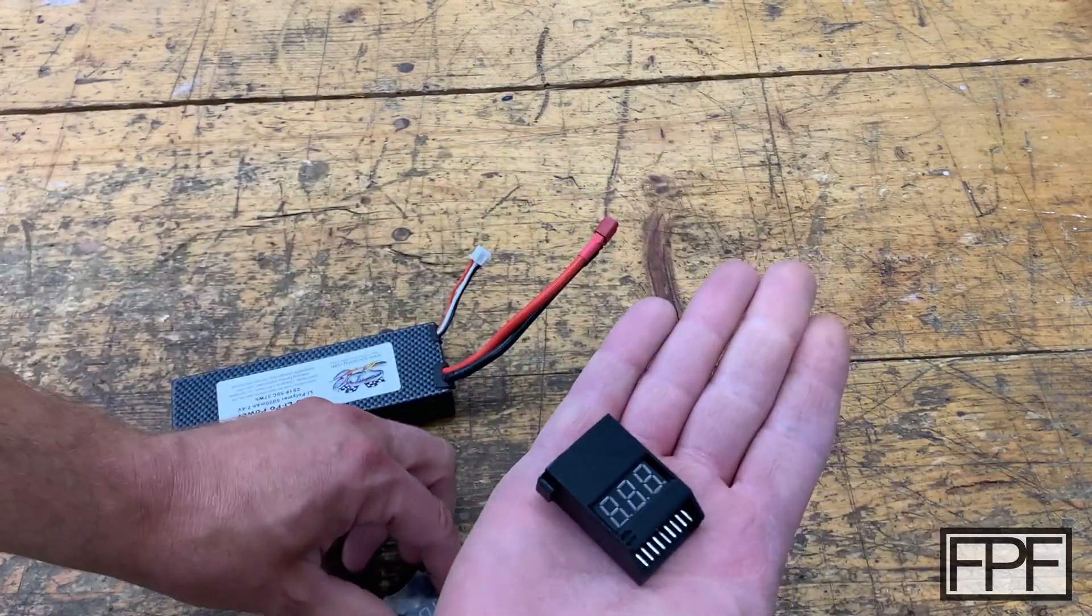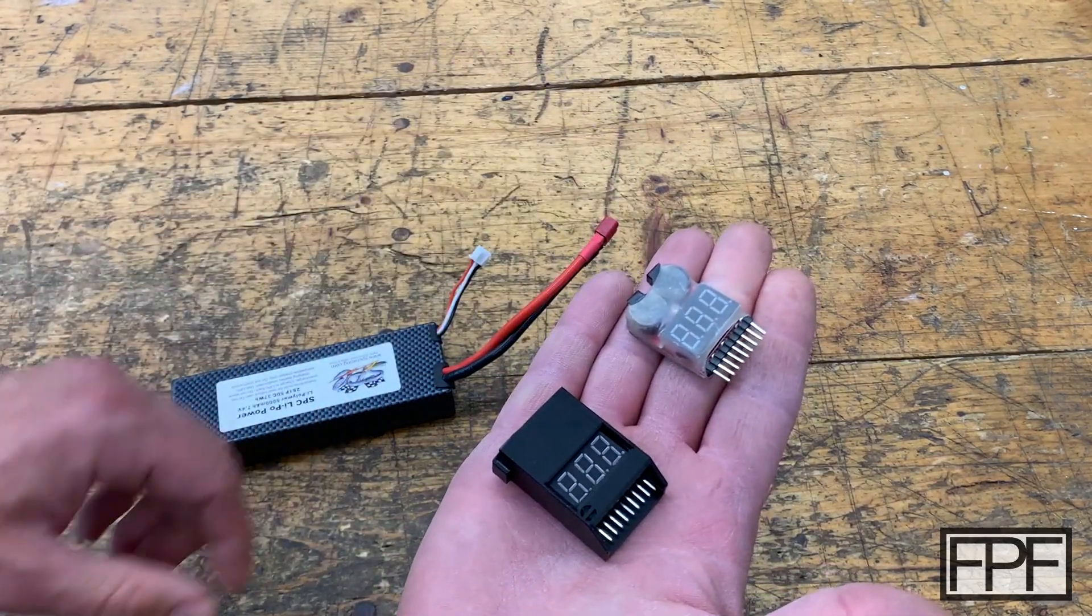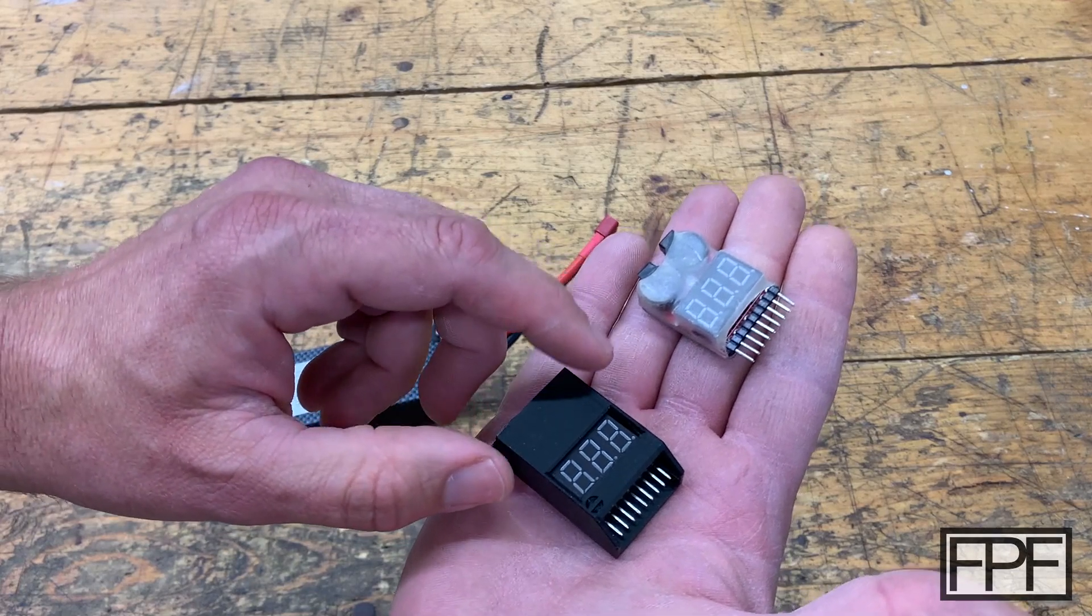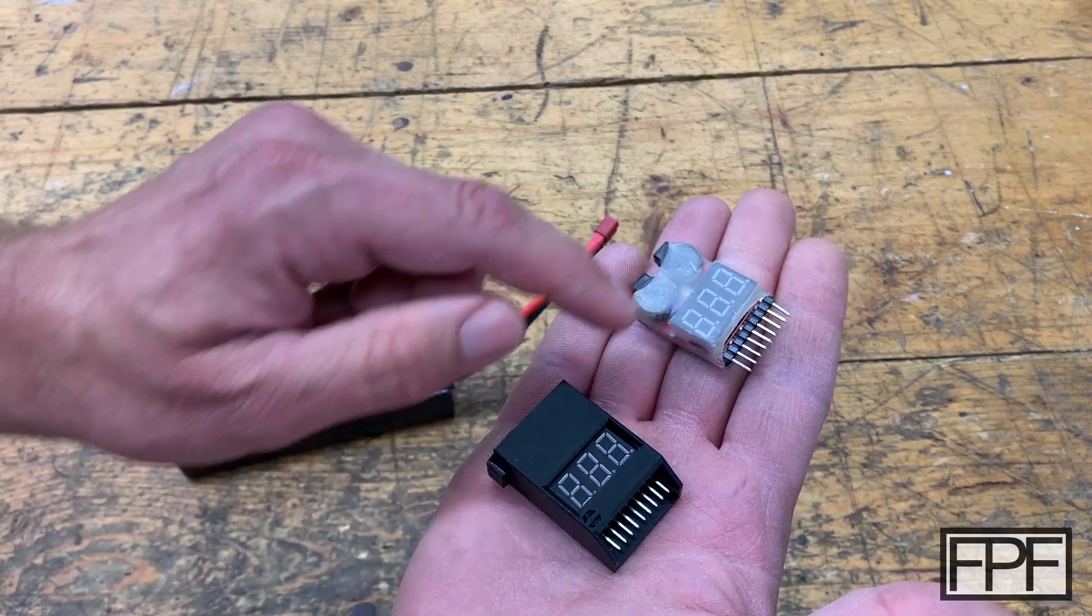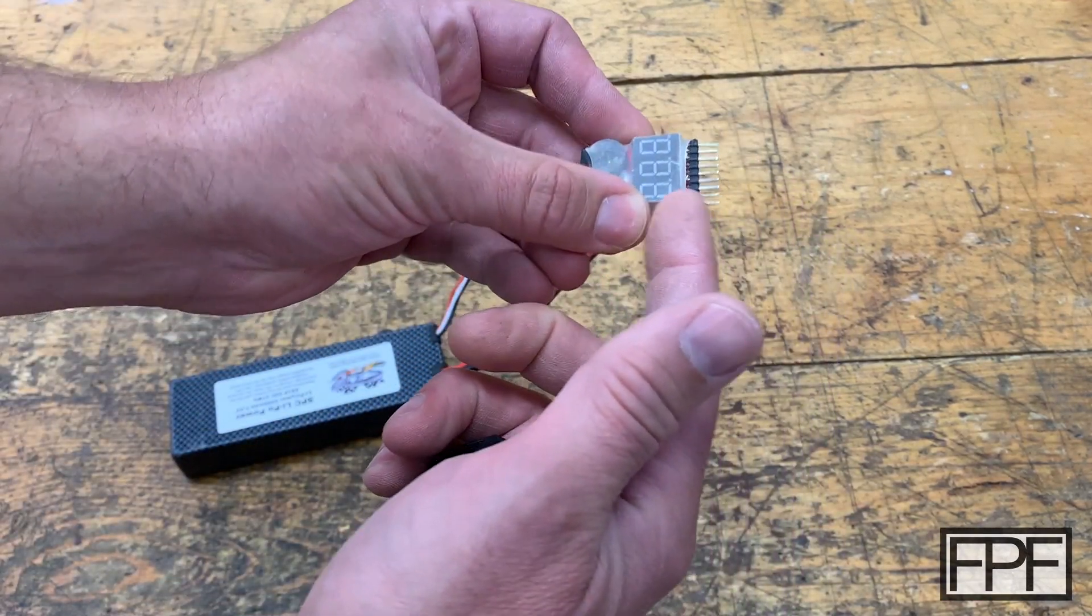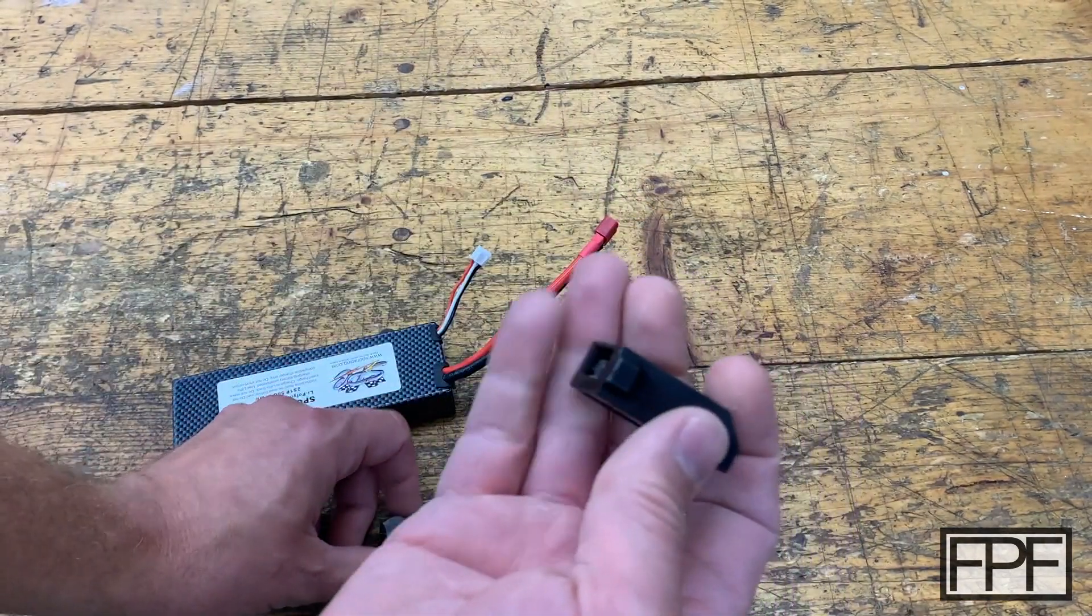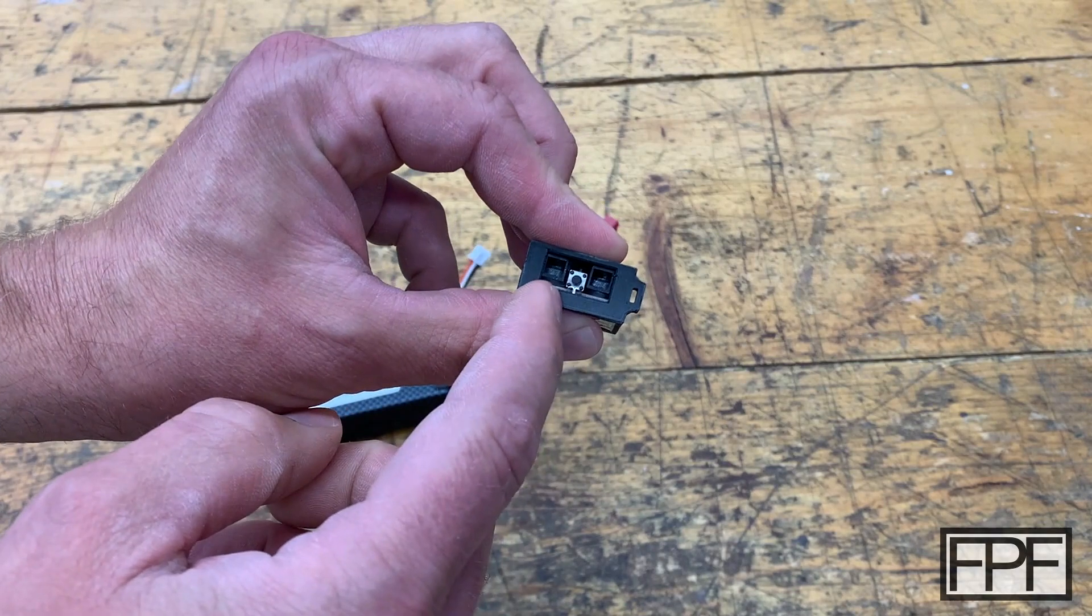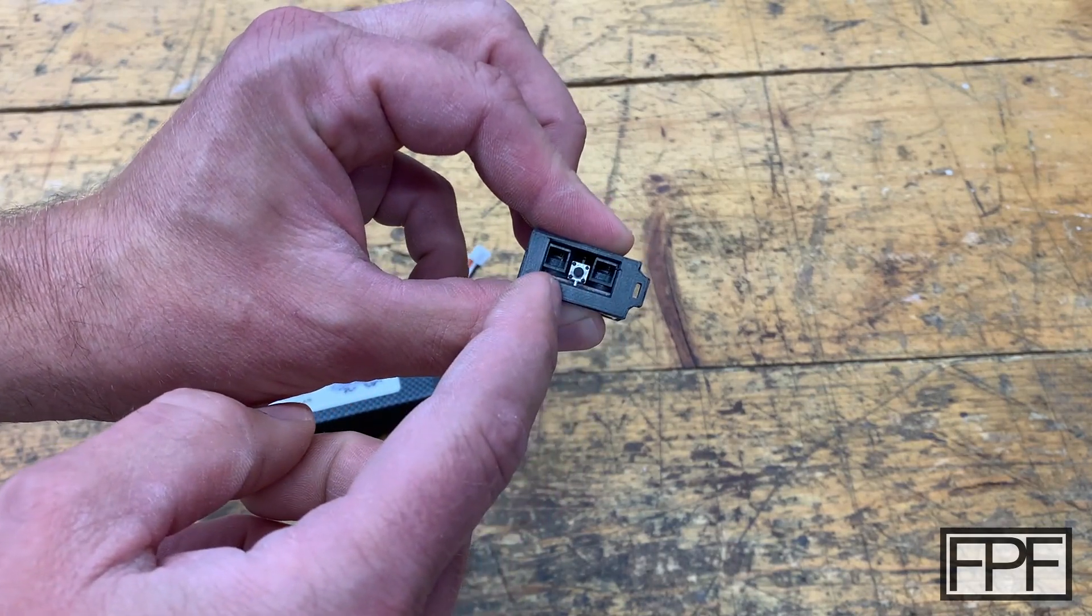So what I designed was this small case for one of these standard LiPo alarms to fit in. It solves a couple different problems. First of all, we get some protection for the screen here. So we can actually cut this heat shrink material off.